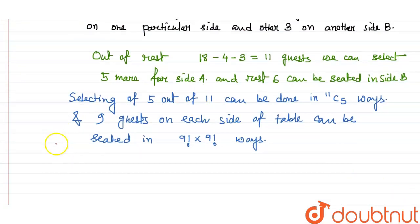So the total number of arrangements is 11C5 into 9 factorial into 9 factorial. This is the total number of ways.